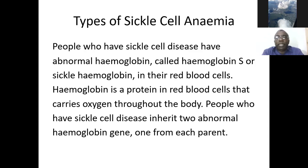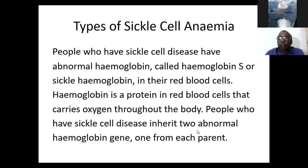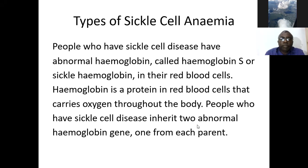There are several types of sickle cell anemia. People who have sickle cell disease have abnormal hemoglobin called hemoglobin S — sickle hemoglobin — in their red blood cells. Hemoglobin is a protein in red blood cells that carries oxygen through the body. People who have sickle cell disease have two abnormal hemoglobin genes, one from each parent.